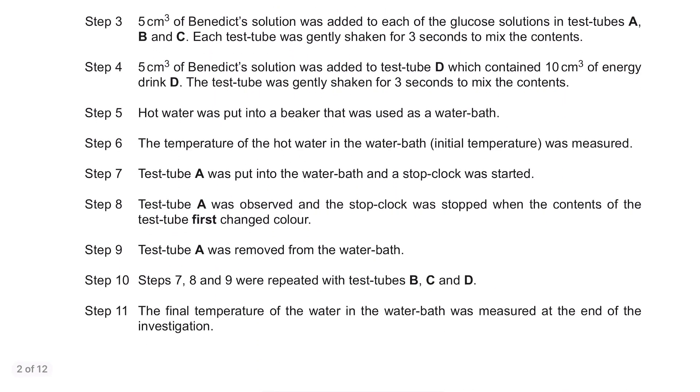Step 3: 5 cm³ of Benedict's solution was added to each of the glucose solutions in test tubes A, B and C. Each test tube was gently shaken for 3 seconds. Step 4: 5 cm³ of Benedict's solution was added to test tube D which contained 10 cm³ of energy drink D and shaken for 3 seconds. Hot water was put into a beaker that was used as a water bath. The temperature of the hot water in the water bath, initial temperature was measured.